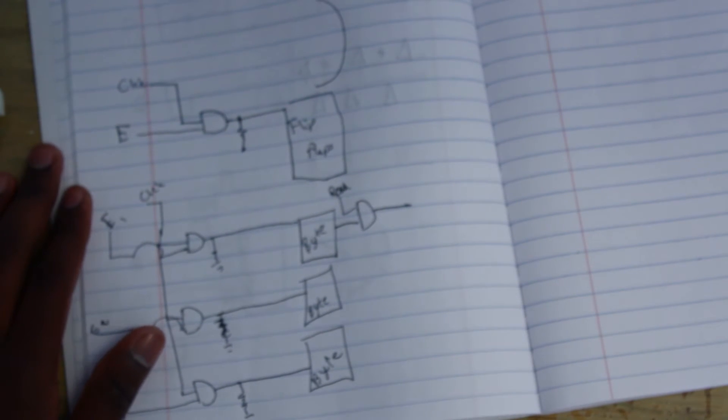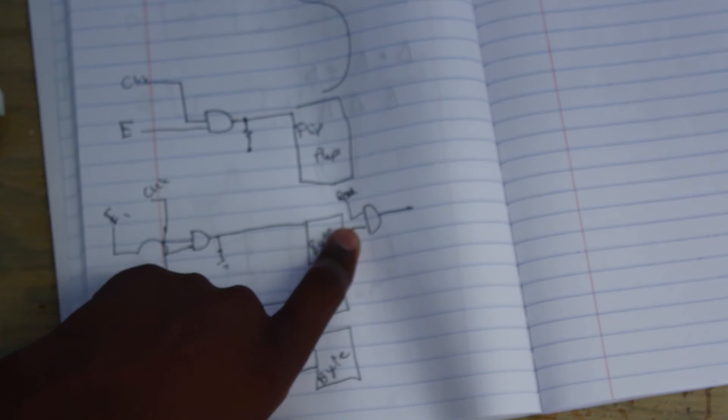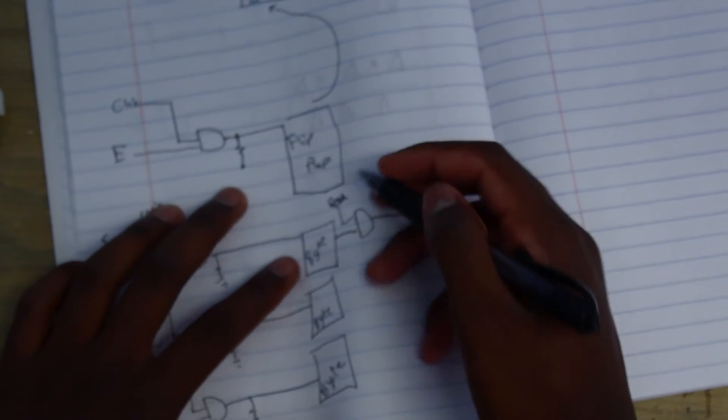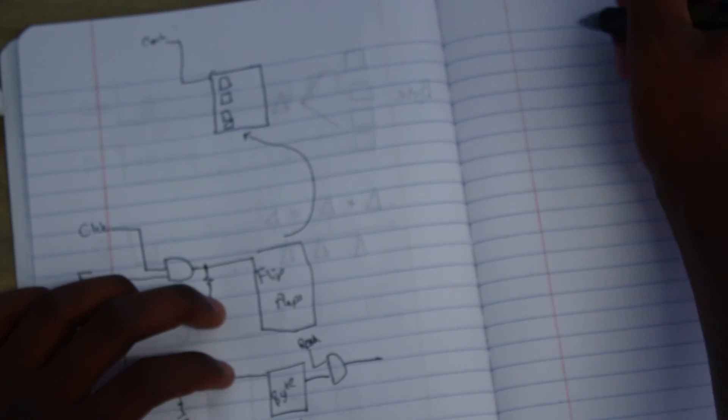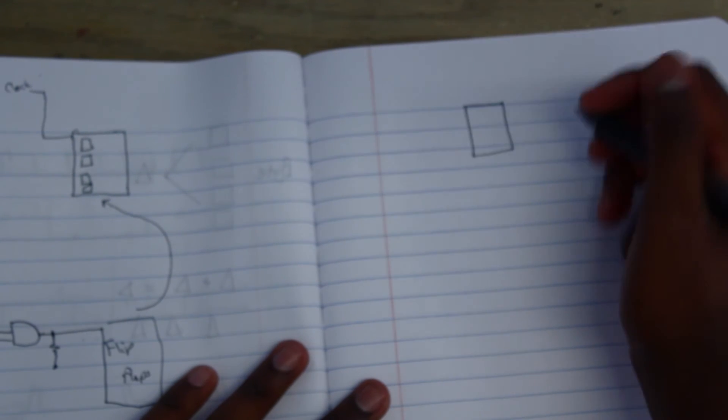Now, the differences between the read and the write is that for the read, you can't put them all on the same AND gate, obviously. Right? Since there's four bytes, they each have to have their own AND gate. So, let me just scoot this over.